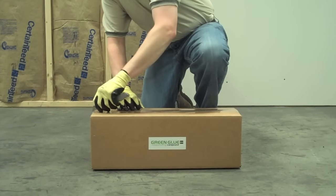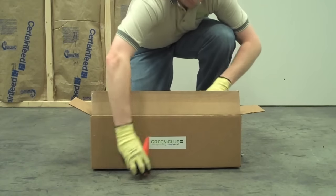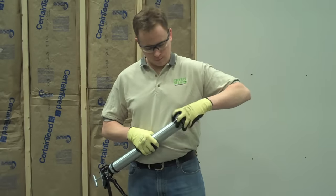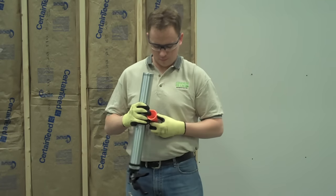When ready to start your project, remove the applicator tool and set of three nozzles from the packaging. Unscrew the nozzle ring and place one nozzle at the end of the applicator tool before replacing the ring.